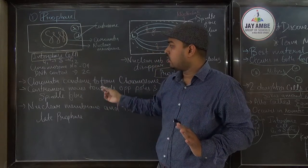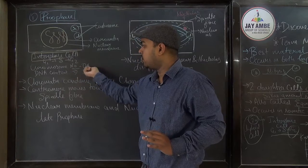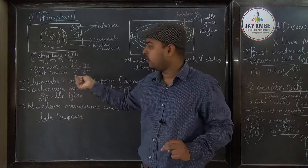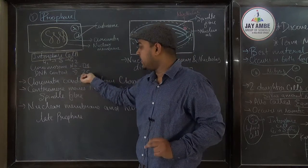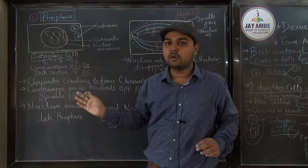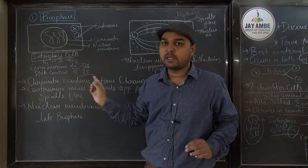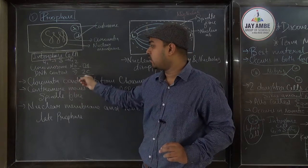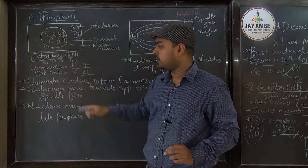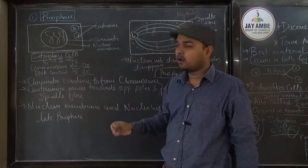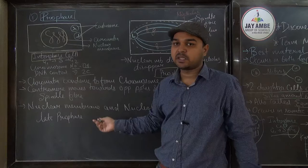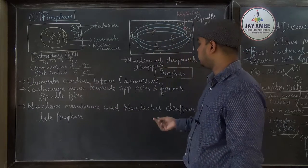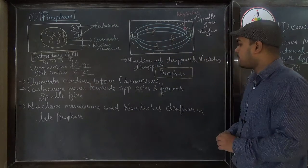In the interphase stage, chromatin fibers are present and nuclear membrane is visible. The chromosome number is 4 and DNA content is 2C. After S phase, DNA content doubles — it becomes 4C after replication. The centrosomes are together, not yet moved to opposite poles.